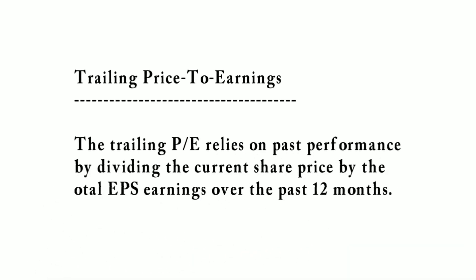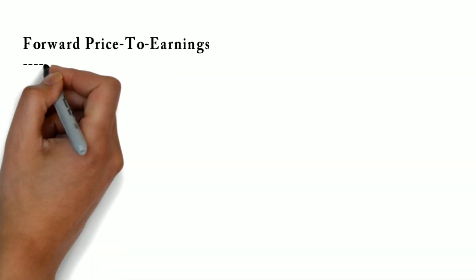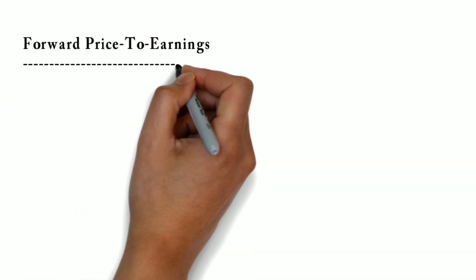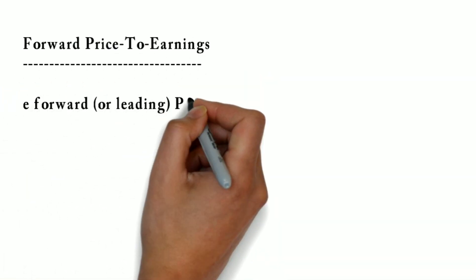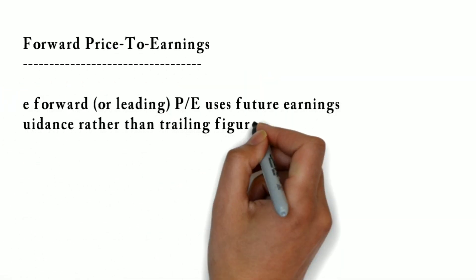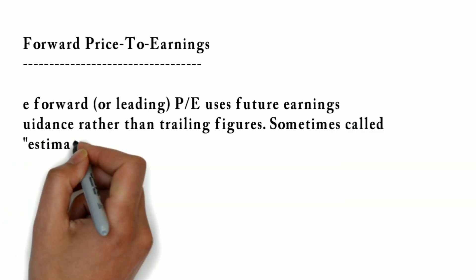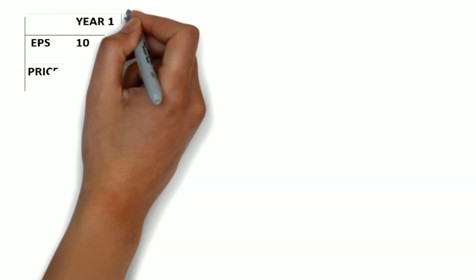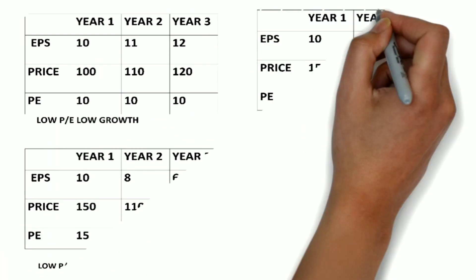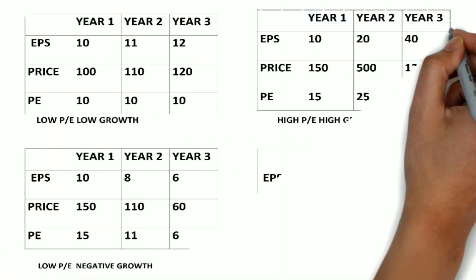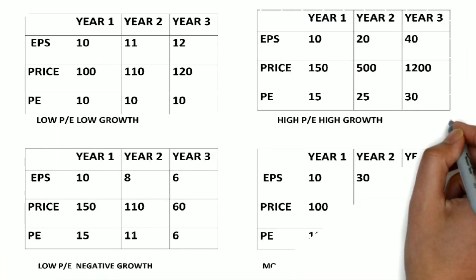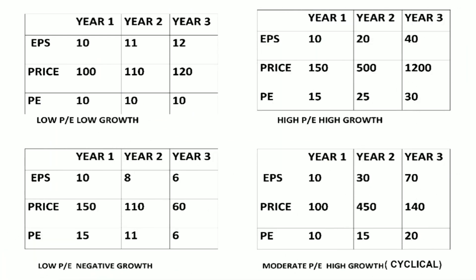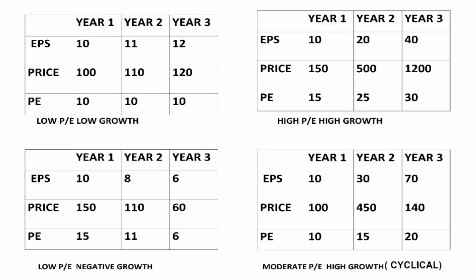With the previous 12 months, it is called the trailing PE. The trailing PE is calculated using the previous 12 months of earnings. We also have a forward PE, which is based on a forecast for future earnings.